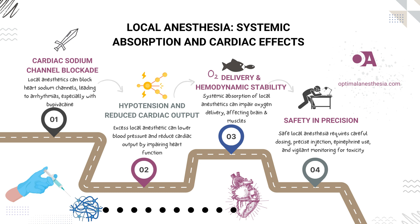Hypotension and reduced cardiac output create a chain reaction that impacts overall cardiovascular stability. If too much local anesthetic gets into the bloodstream, it can also lower your blood pressure, causing hypotension, and reduce the heart's output. Essentially, the heart struggles to pump as efficiently, which can result in decreased cardiac output. This happens because local anesthetics in large doses, or if accidentally injected into a blood vessel, can impair the heart's ability to contract properly.